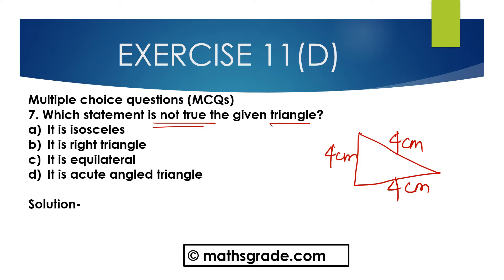We know any triangle where all three sides are equal, that triangle is said to be an equilateral triangle. So this triangle is an equilateral triangle. Now, which statement is not true? — it is a right angle triangle. This is not true.